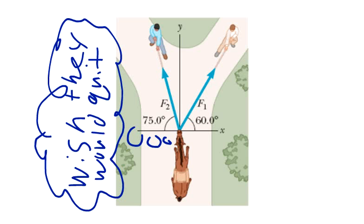Question number 12 asks, the helicopter view of this figure shows two people pulling on a stubborn mule.